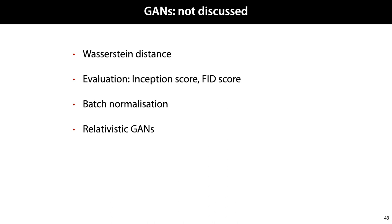We've given you a high-level overview of GANs, which will hopefully give you an intuitive grasp of how they work. However, GANs are notoriously difficult to train, and many other tricks are required to get them to work. Here are some phrases you should Google if you decide to try implementing your own GAN. In the next video, we'll look at a completely different approach to training generator networks: the method of autoencoders.